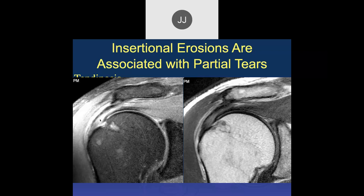The treatment here would be to leave this in a sling for a while and let things quiet down and heal. These erosions — especially at the infraspinatus insertion — are seen all the time. There are very few older adults who don't have an erosion at the infraspinatus insertion. These are due to chronic traction injuries and associated with little partial tears that tend to heal in most people. But if you overuse it, they'll go into a full-thickness tear.